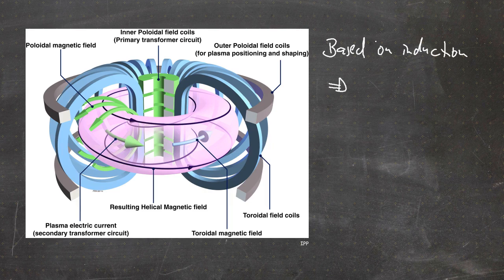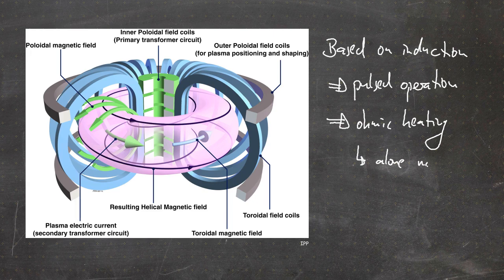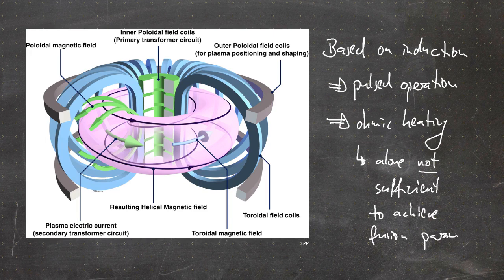The tokamak being based on induction has a few consequences. First, it is an inherently pulsed device, because we can only induce a current in the plasma while ramping a voltage up or down. In addition — and this is a big advantage — driving a current in the plasma also provides a heating mechanism called ohmic heating. However, ohmic heating alone is unfortunately not sufficient to achieve fusion parameters, because as we increase the plasma temperature the resistivity drops and thus the heating efficiency from ohmic heating drops as well.